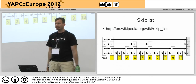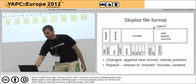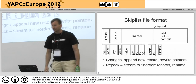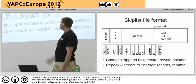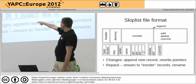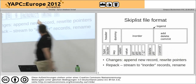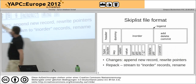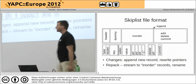It's a fast way of finding your way along a linked list. Usually implemented in memory, but in our case it's implemented on disk. So this is the file format, roughly. It has, over here, this whole section which is the format of a record on disk.